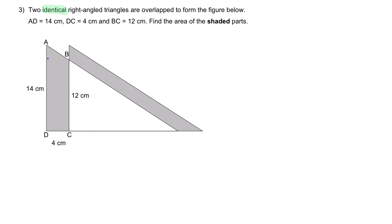This shaded part is easier to find. We break it up into a rectangle and a triangle. We can find the area of the rectangle: 4 times 12. We can find the area of the small triangle: half times base of 4 cm.